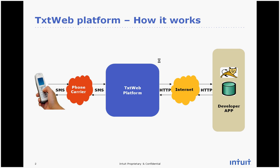As you can see in this high-level flow, the developer's application does not need to understand or communicate via SMS to the end user. The TextWeb platform handles receiving the incoming SMS and translating it to HTTP, as well as taking the HTTP response back and translating that to the SMS protocol and sending it back to the user's handset.